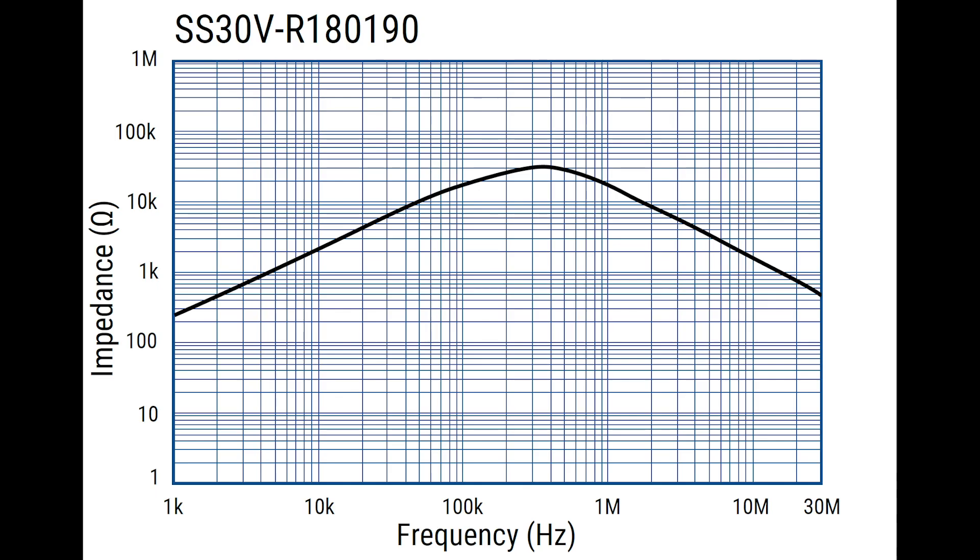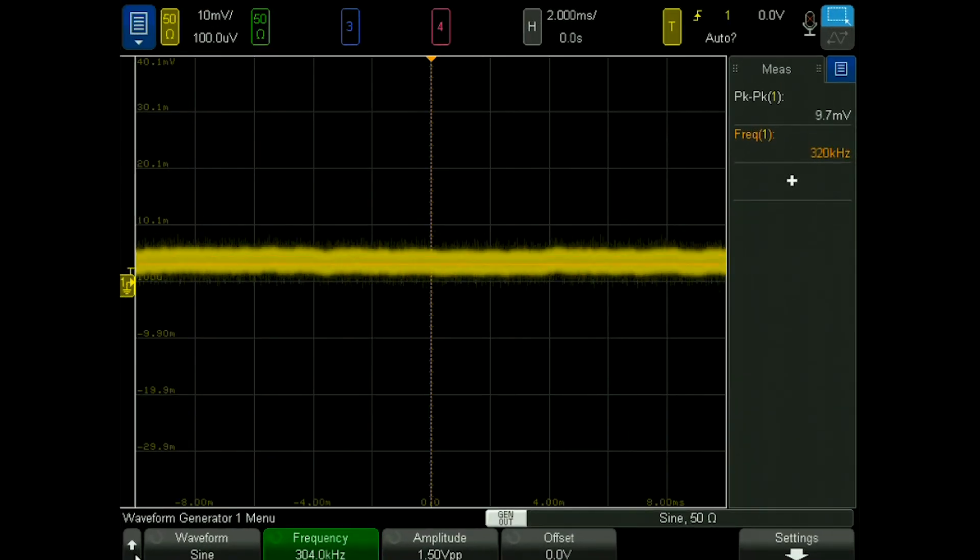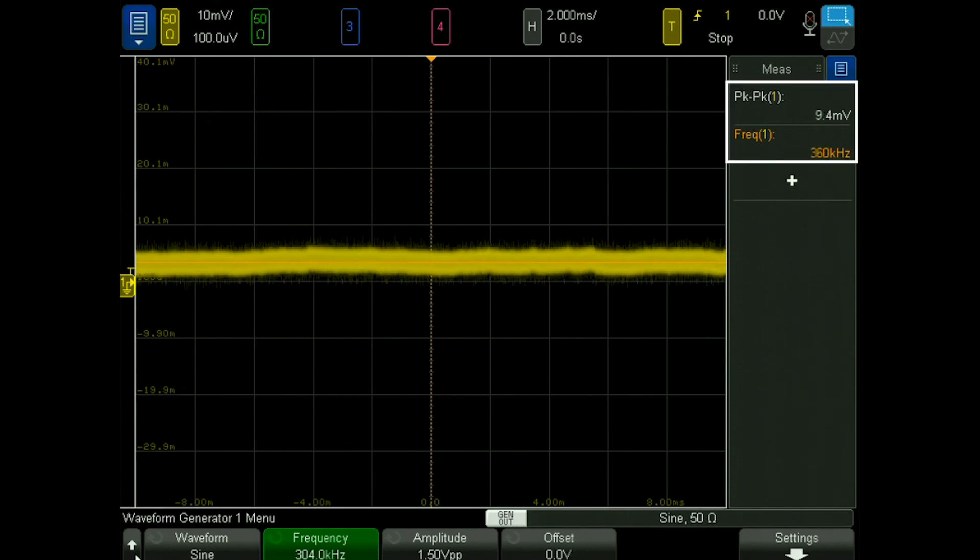If we take a look at the impedance versus frequency plot from the SS30V common mode choke, we can see that this frequency is the peak impedance that this choke produces. So this matches with what we see from the oscilloscope, where we saw maximum attenuation at around 300 kilohertz.